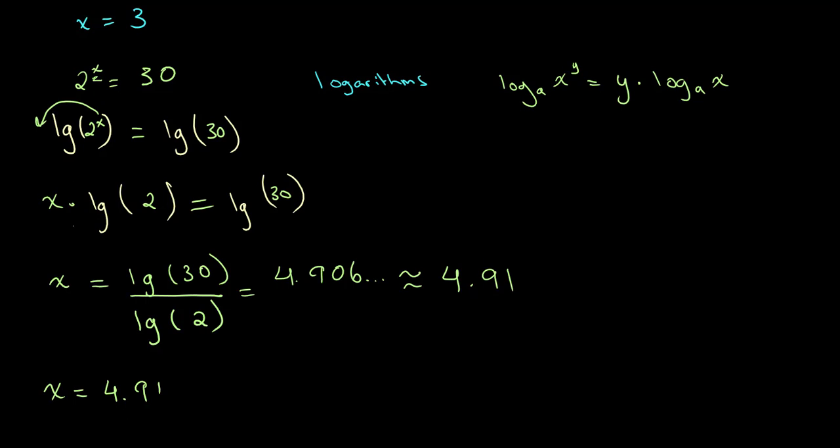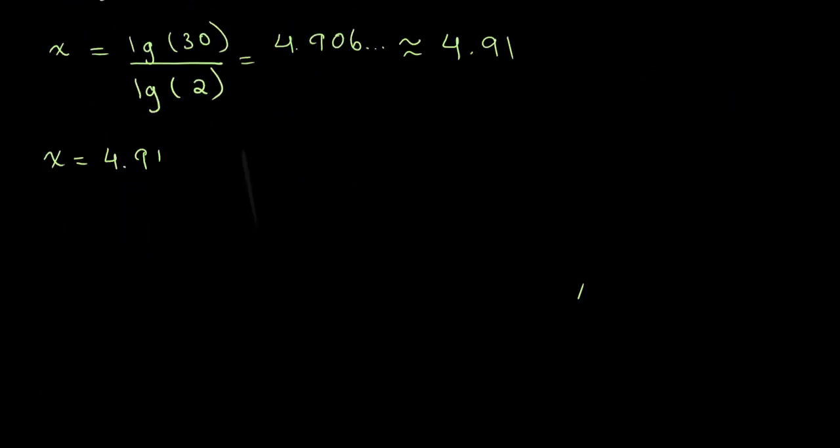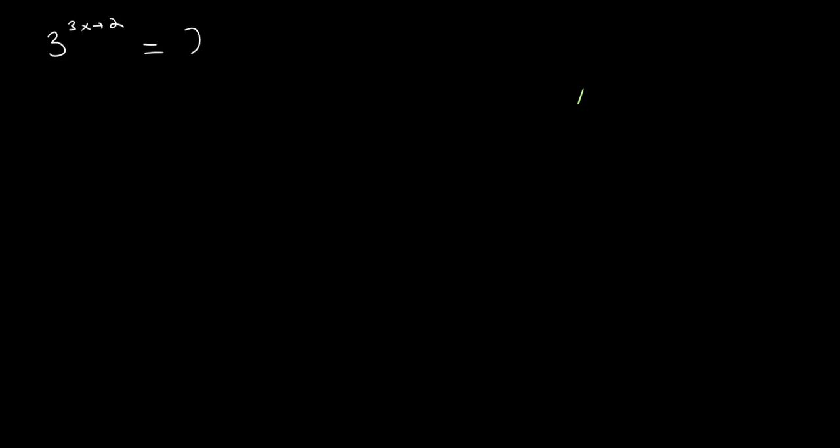That seems pretty straightforward. I'm going to go over another example just to clarify this concept. So let's say in this case that we have 3 to the power of 3x plus 2 is equal to 20. And once again we have to solve for x.